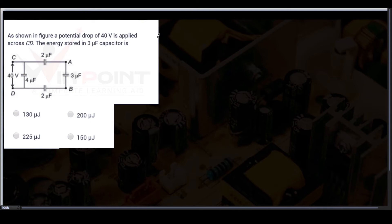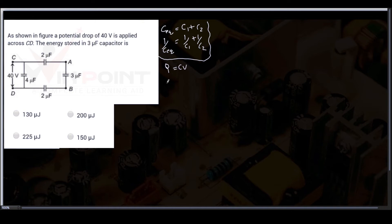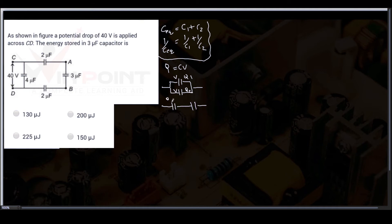You need to know two equations: for parallel connection, C eq equals C1 plus C2; for series connection, 1 by C eq equals 1 by C1 plus 1 by C2. Also Q equals CV. In parallel connection, charge is different (Q1, Q2) and voltage is the same (V, V). In series connection, charge is the same (Q, Q) and voltage is different.